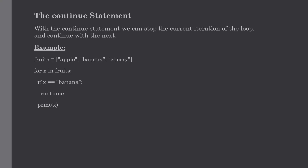Our next topic is the continue statement. With the continue statement, we can stop the current iteration of the loop and continue with the next. In this case, if you want to skip the second item in our list and execute only the first and last items, we can do that using the continue statement — instead of 'break', we use 'continue'. It will print the first item, skip the second, and also print the remaining items in the list.